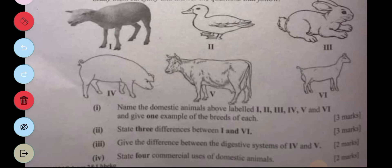Part four: Give four commercial uses of domestic animals. They can be used for meat production, leather production, and wool production.